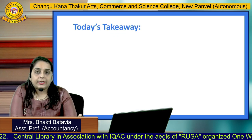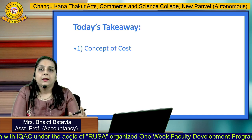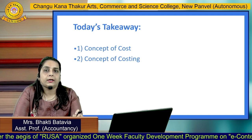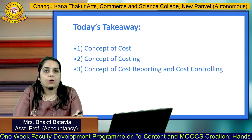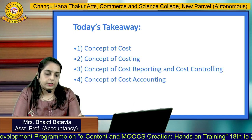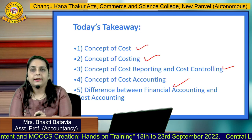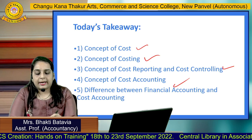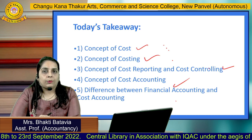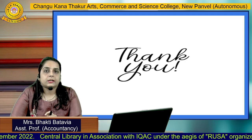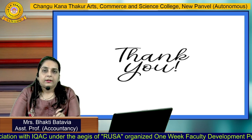Today's takeaway: we discussed the concept of Cost — all monetary terms for manufacturing a product. We learned the concept of Costing — how to calculate cost. Then we learned Cost Reporting and Cost Control, and finally the concept of Cost Accounting. We also discussed the comparison between Financial Accounting and Cost Accounting. In the next class, we will discuss the different classifications of cost. Thank you all — happy learning!